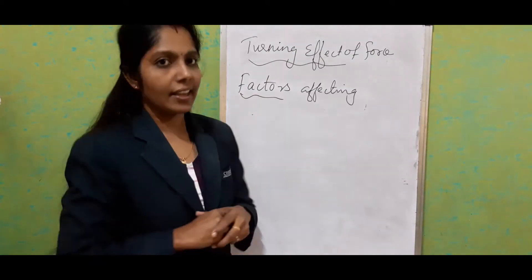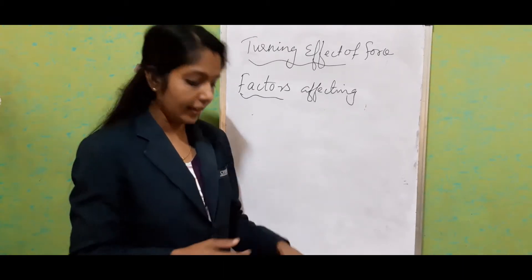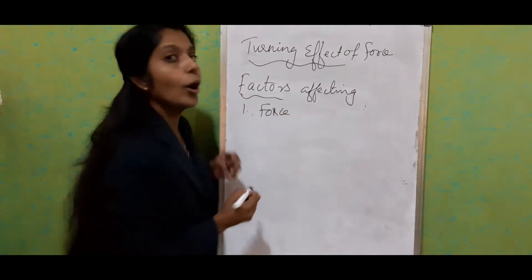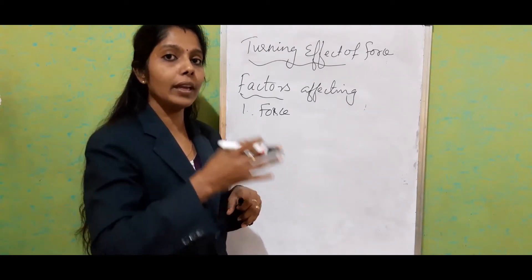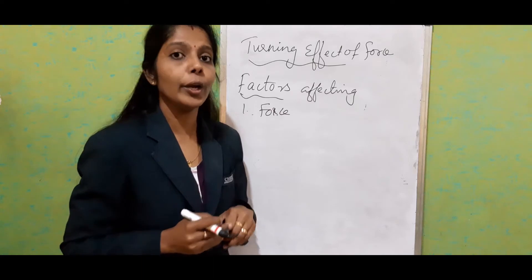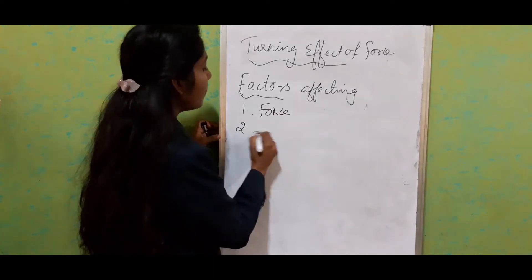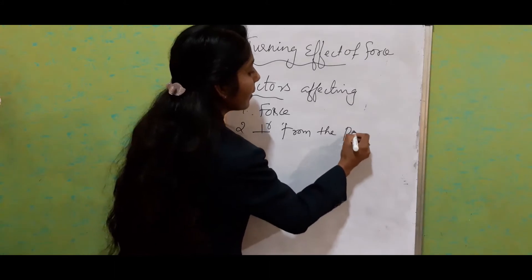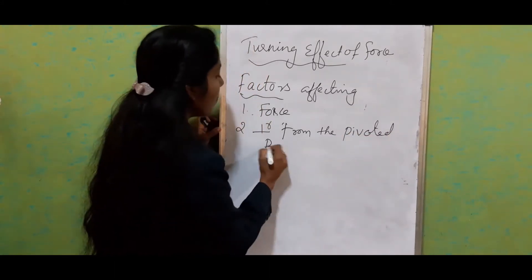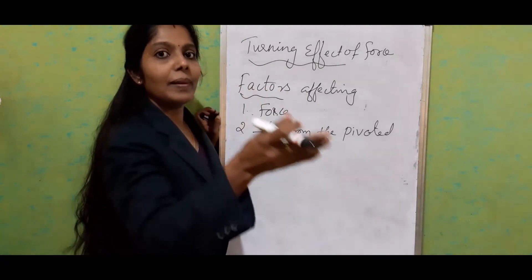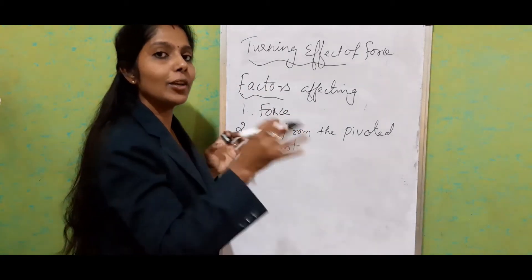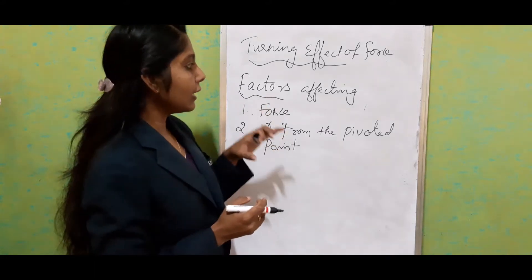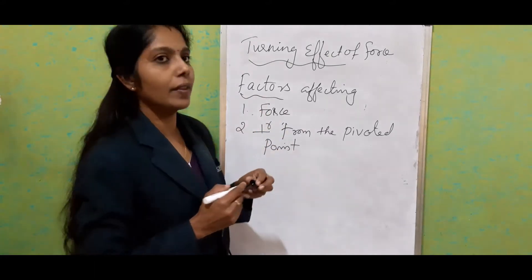Now we will see the factors affecting turning effect. There are mainly two factors. First, the force acting on the body in a perpendicular or normal direction. Second, the perpendicular distance from the pivoted point to the place where we are applying the force — that is, the perpendicular distance between the pivoted point and the line of application of force.